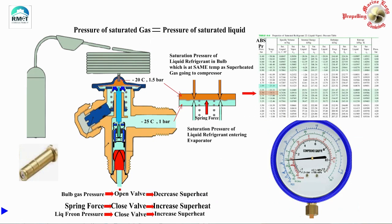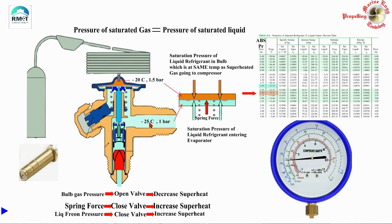Now let us concentrate on the working of this thermostatic expansion valve. What is happening is the liquid from the condenser is entering this expansion valve, and the refrigerant is leaving the expansion valve, dropping its temperature to minus 25 on its way to the evaporator. The pressure of the liquid refrigerant — which is 1 bar, corresponding to minus 25 — is acting on a diaphragm. This pressure, equal to the saturation pressure of the liquid refrigerant at minus 25, is acting on the bottom of the diaphragm.